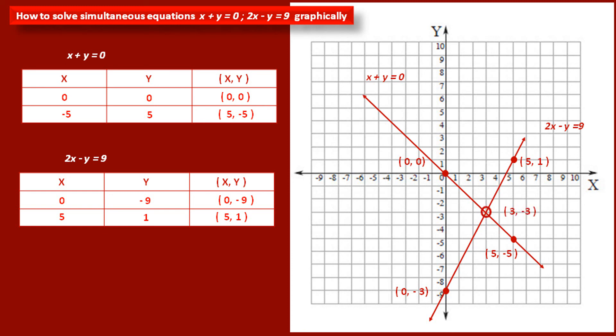Now, these two lines intersect each other at one point. This point has x coordinate 3 and y coordinate minus 3. This is the point of intersection, and these coordinates represent the solution of this given problem. The value of variable x is 3 and the value of variable y is minus 3. So (3, minus 3) is the solution of the given linear equations.